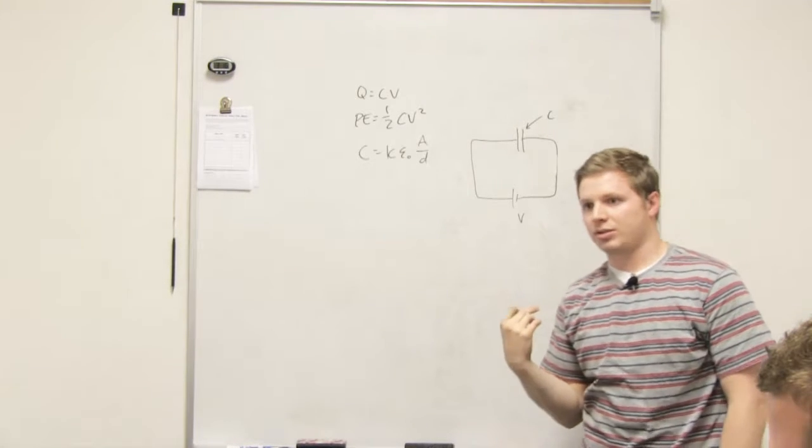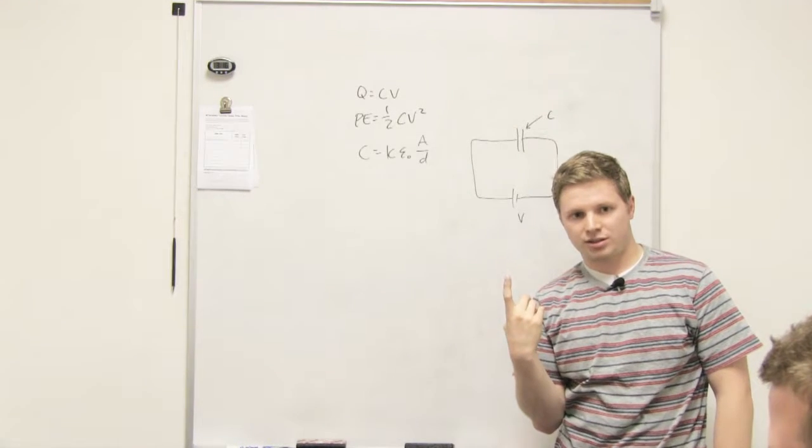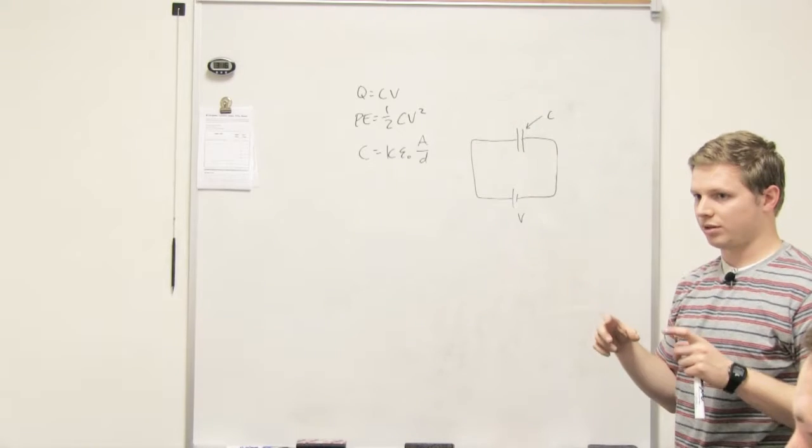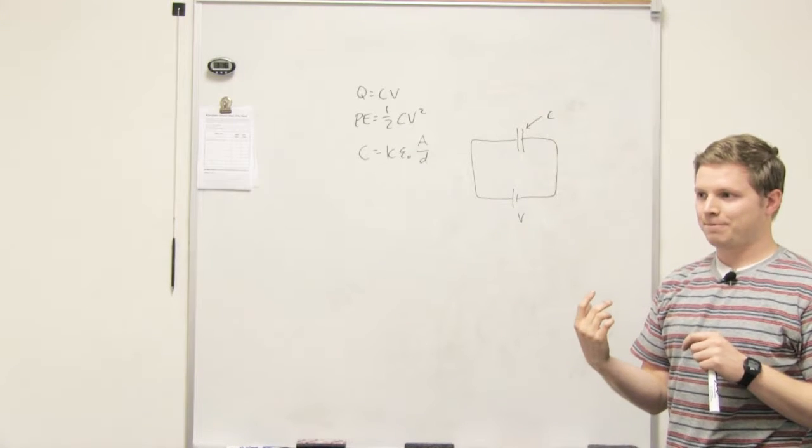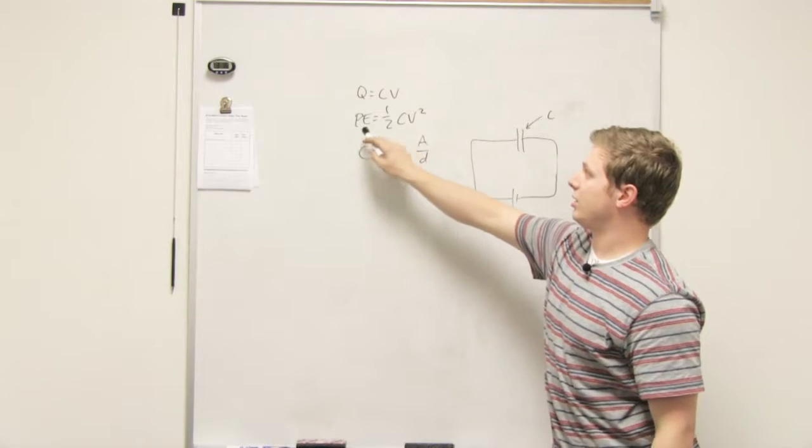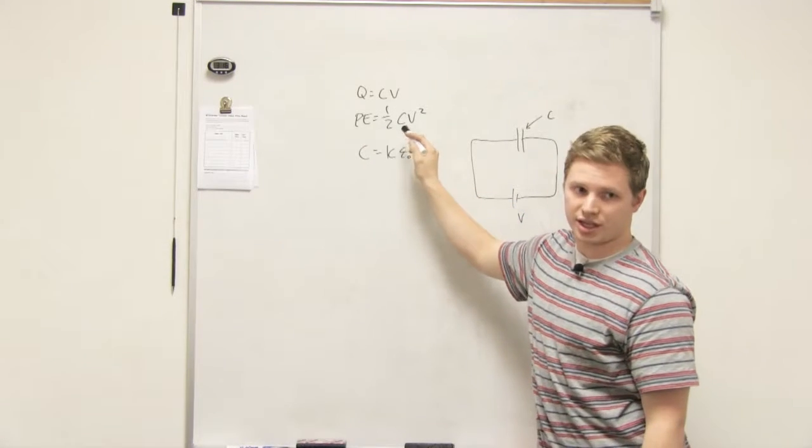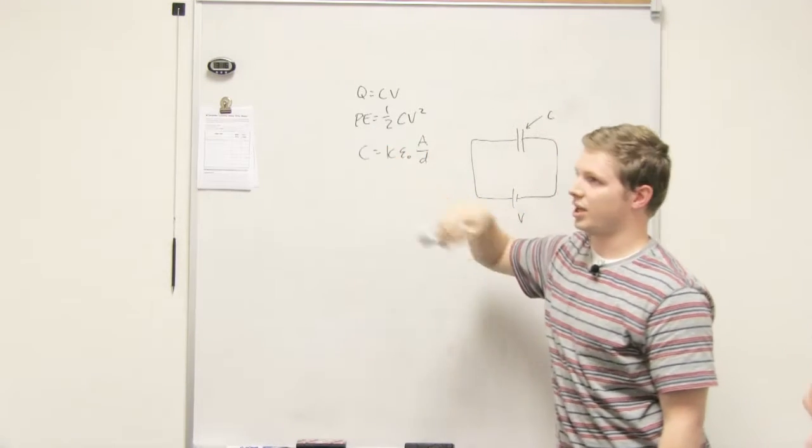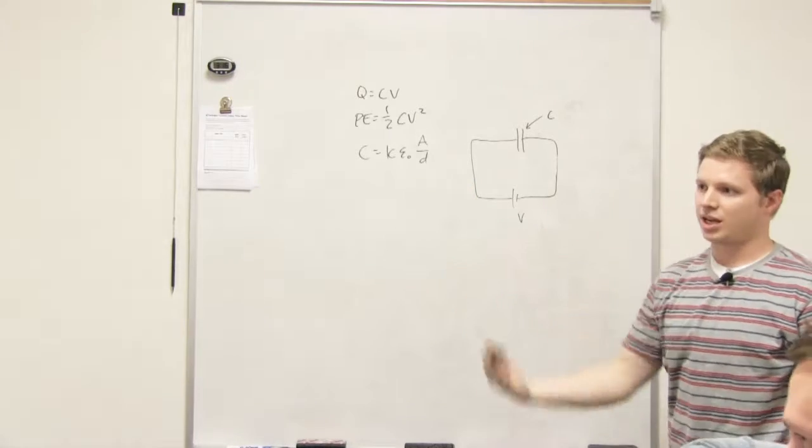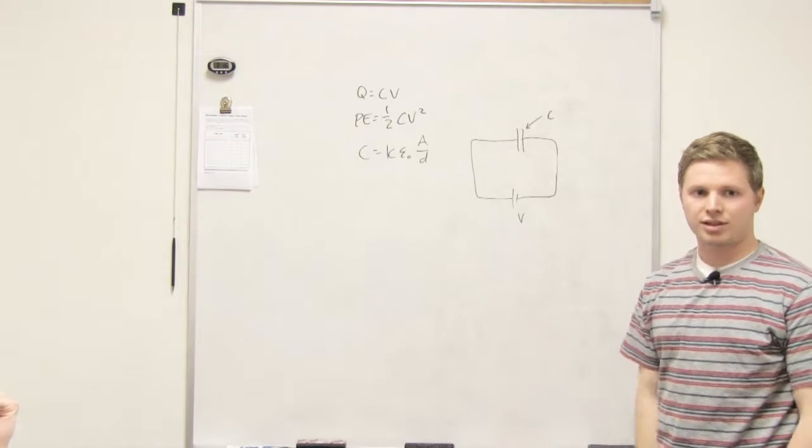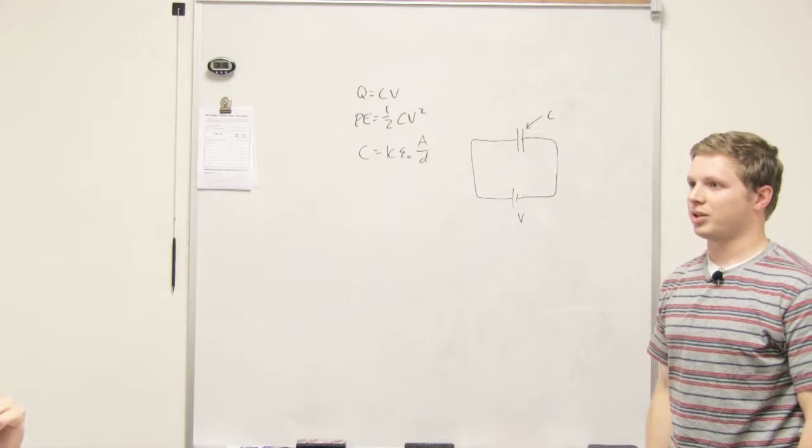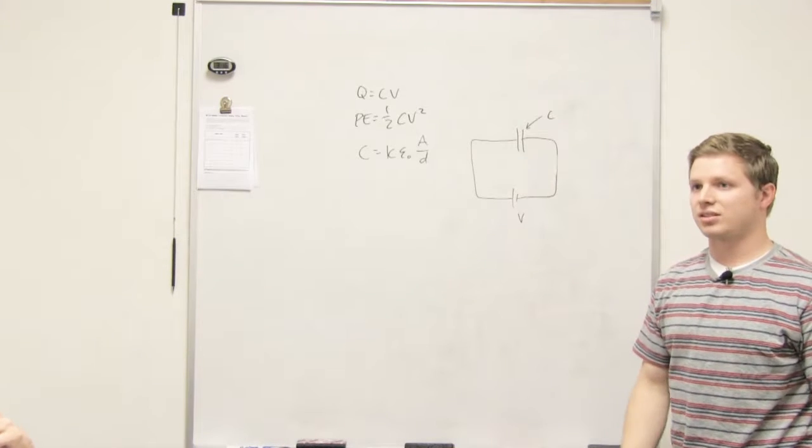There was that problem in your homework, the last one about the camera flash. So for instance, that one, that would be an application that's a capacitor. It basically stores charge and it can use that energy to make a camera flash sort of thing. So, I mean, I don't know all the applications for it. But yeah, they're in a lot of places.